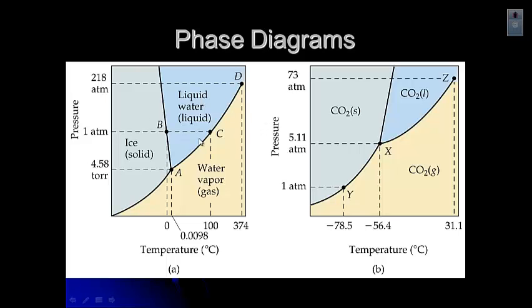Hopefully you noticed that with the water phase diagram, this portion, the boundary between the solid and the liquid, has a negative slope. This boundary for dry ice, CO2, has a boundary between the solid and liquid that has a positive slope.